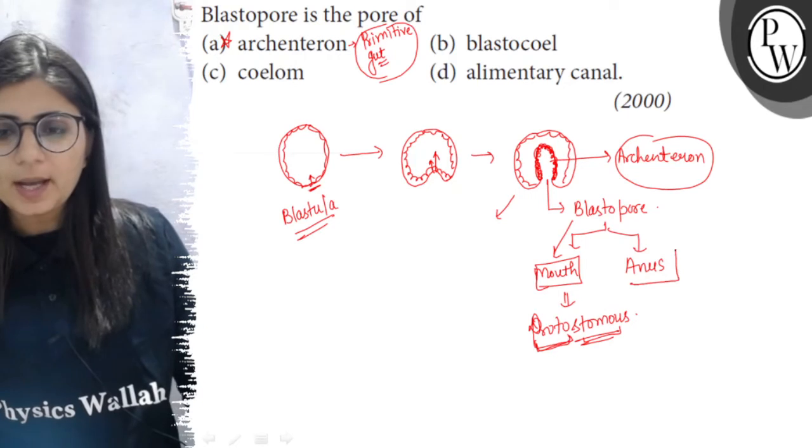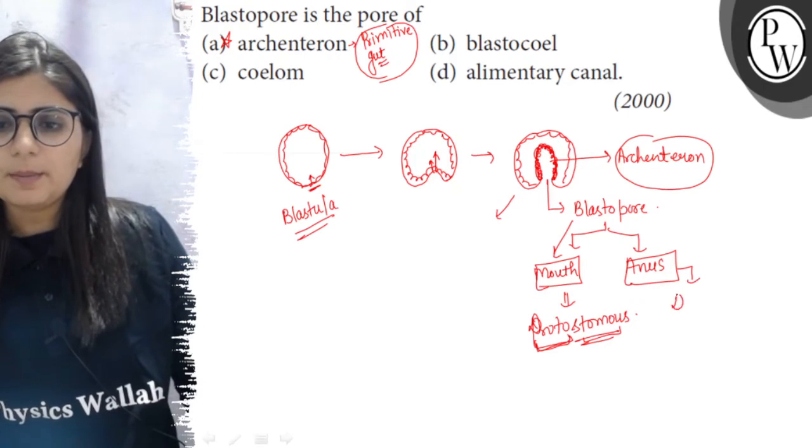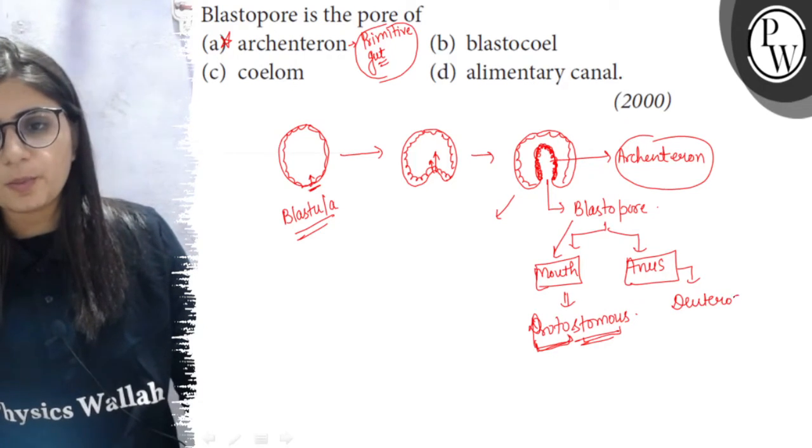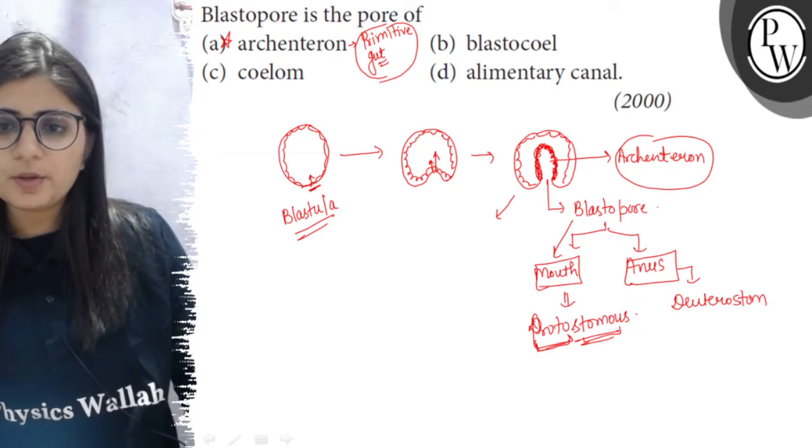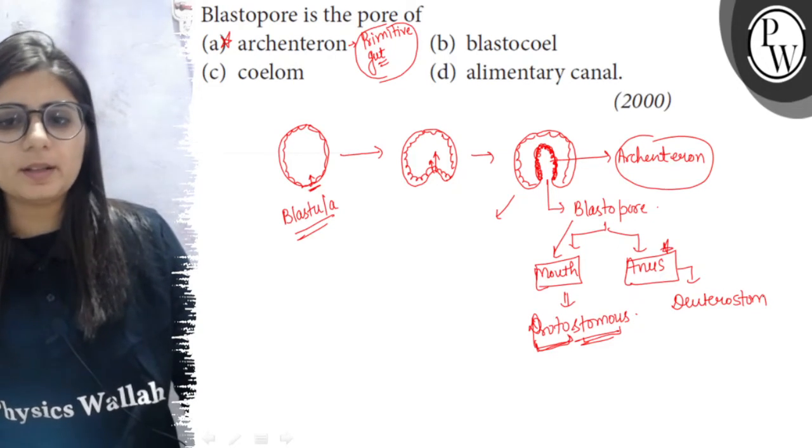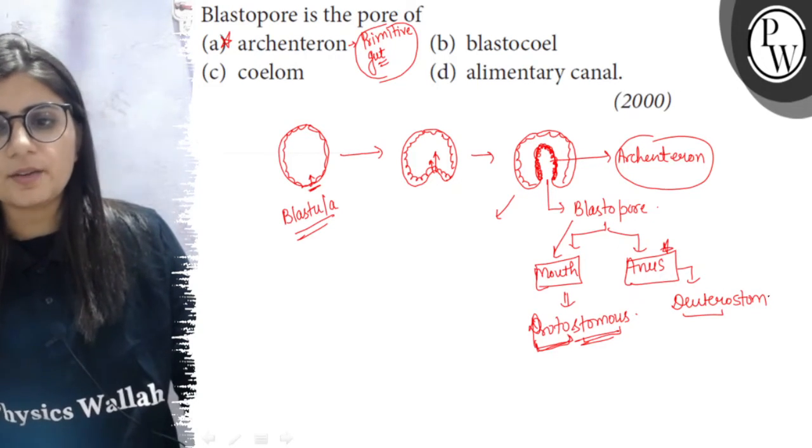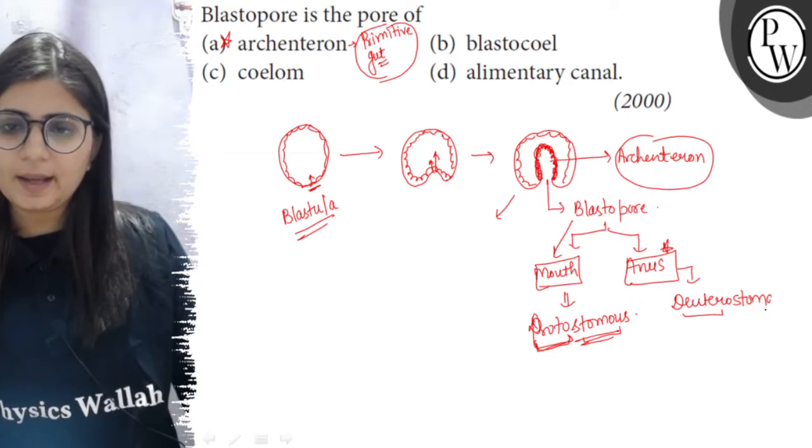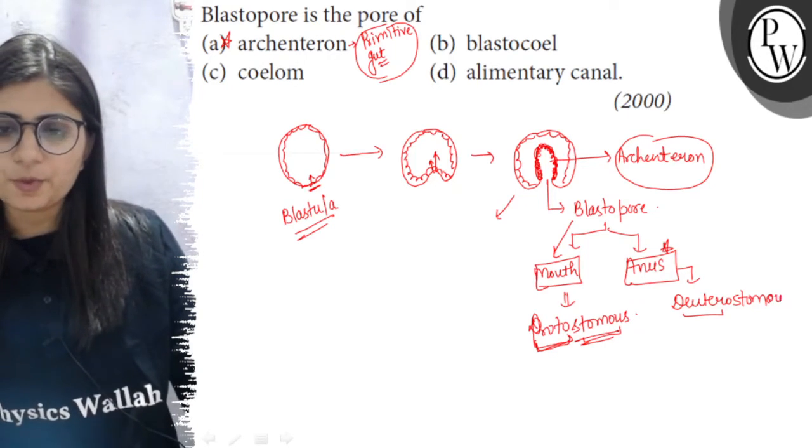In case of animals which are known as deuterostomous, the blastopore is forming the anus. Deutero means secondary. So mouth is formed secondarily while the anus is formed from the blastopore.